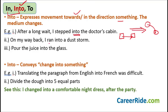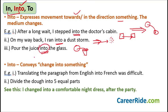'On my way back, I ran into a dust storm' — I was coming by car and there was motion involved. 'Pour the juice into the glass' — because there is a sense of movement and the medium is also getting changed. Earlier the juice was in the jug, now I am pouring it into the glass. The juice is moving from the jug into the glass and the medium is changing. So 'into the glass' is the correct usage.